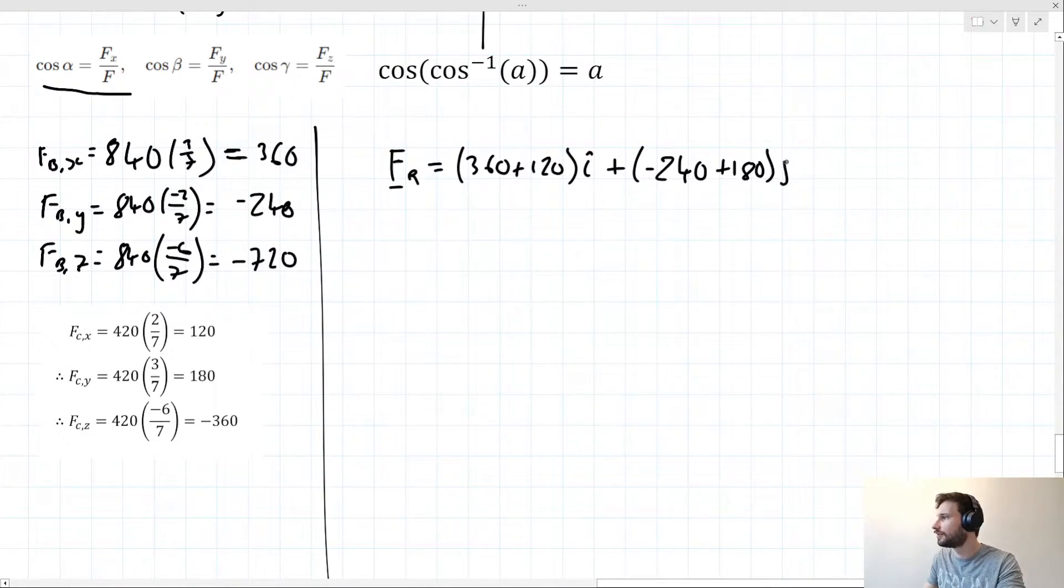plus (-720 minus 360)k. Simplifying this, vector FR equals 480i minus 60j minus 1080k.